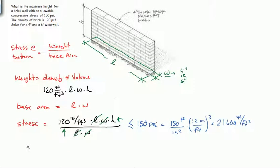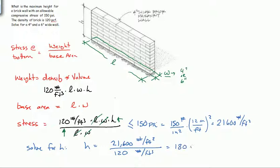So solve for H. H is equal to 21,600 pounds per foot squared divided by 120 pounds per foot cubed. And that gives us 180 feet.